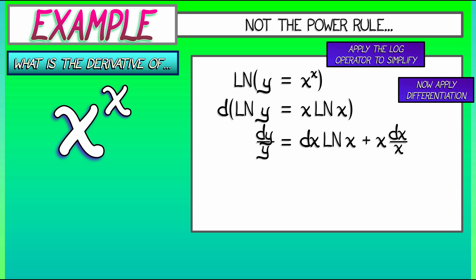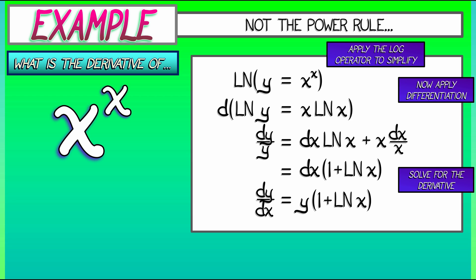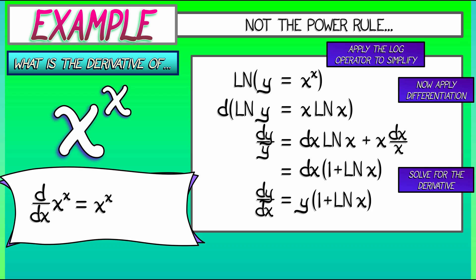Now we can factor out that dx, and what's left over is quantity one plus log of x. Now we can take this equation, manipulate the differentials, and solve for the derivative, getting dy dx equals y times one plus log of x. Now that's not quite perfect because it's got that y in there, but we can fix that by substituting in x to the x, and we get that the derivative of x to the x is really x to the x times quantity one plus log of x.